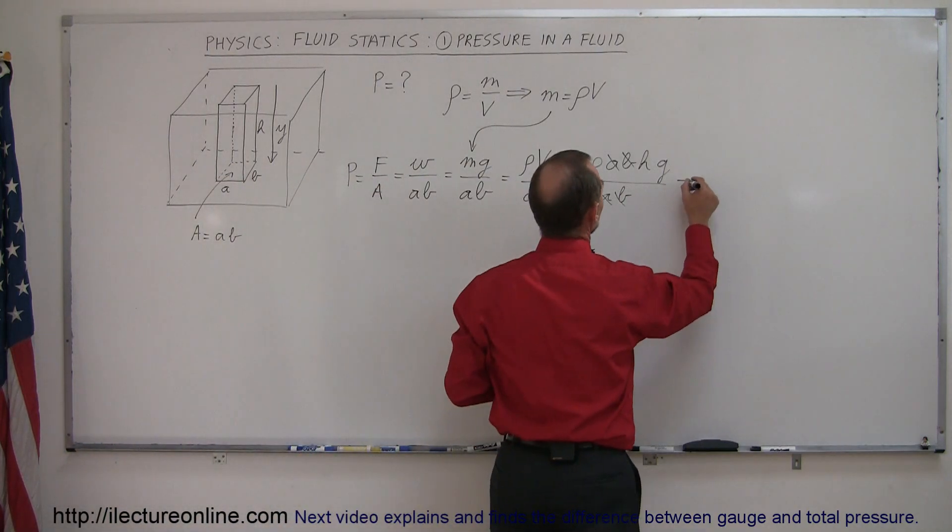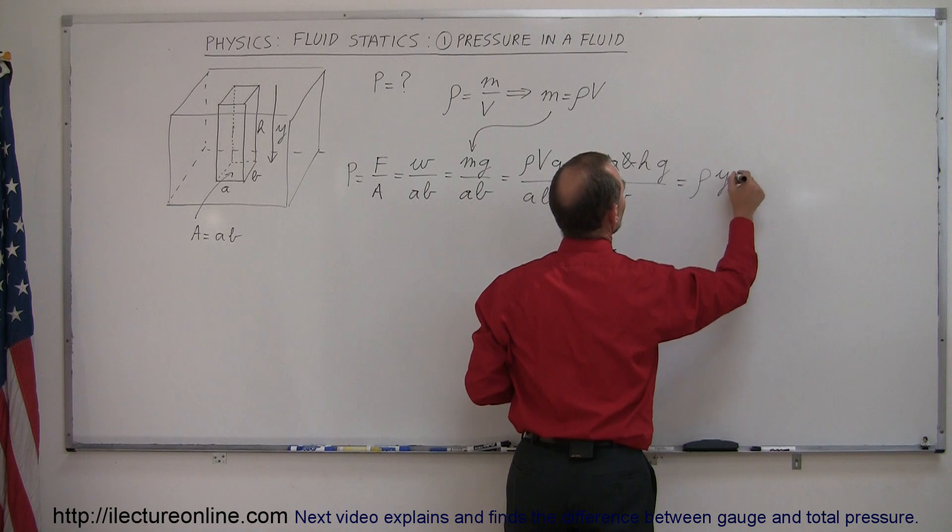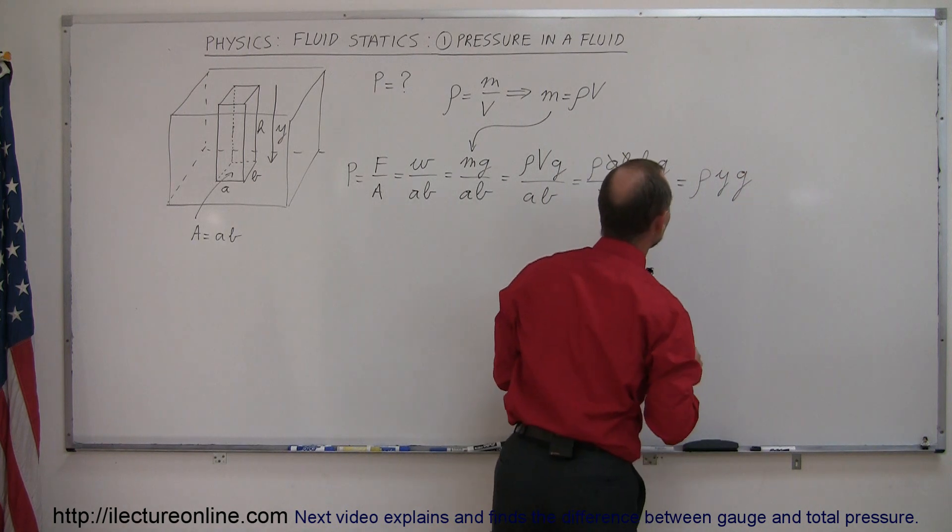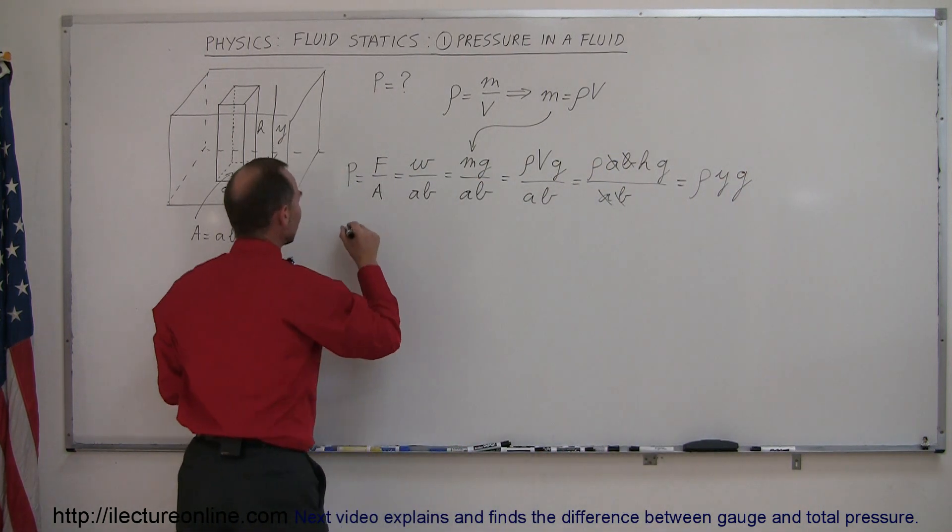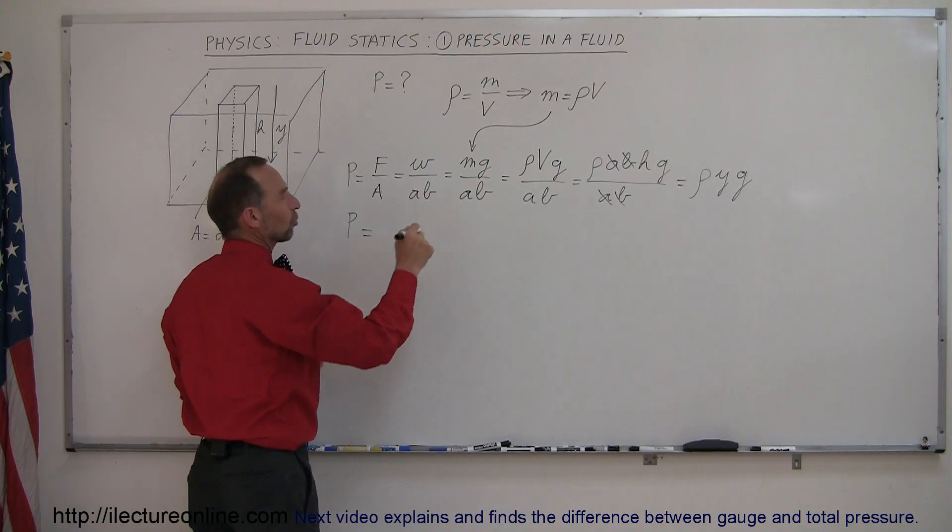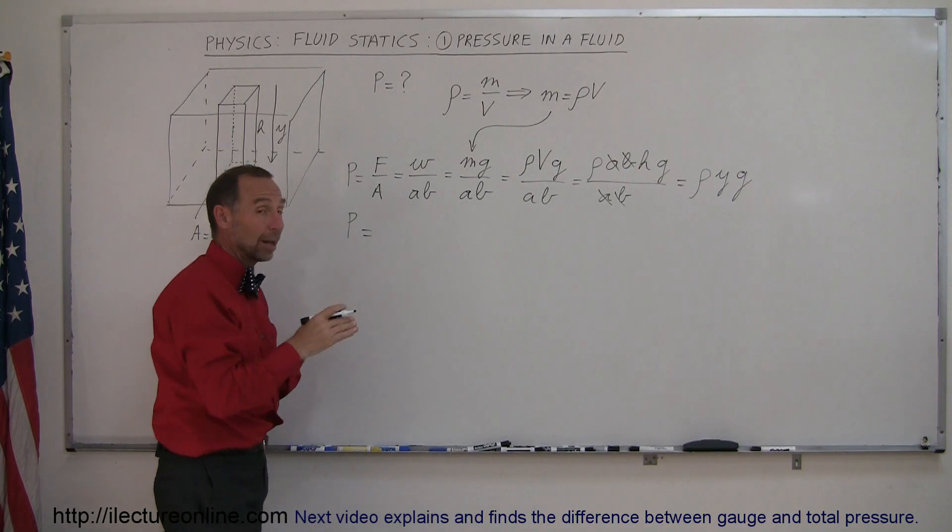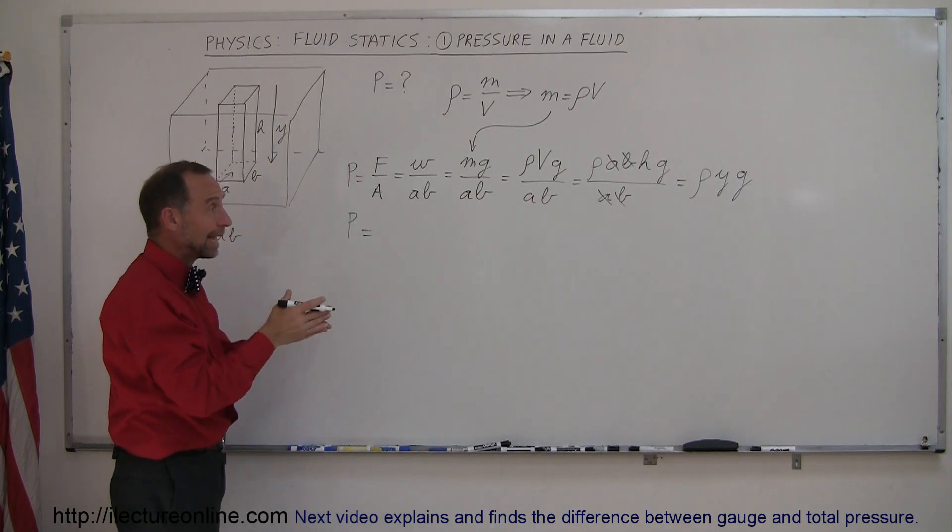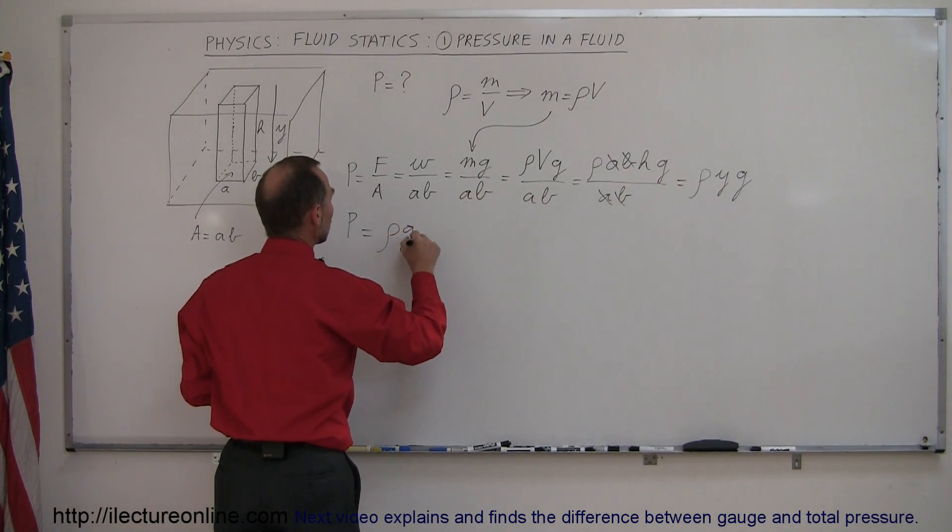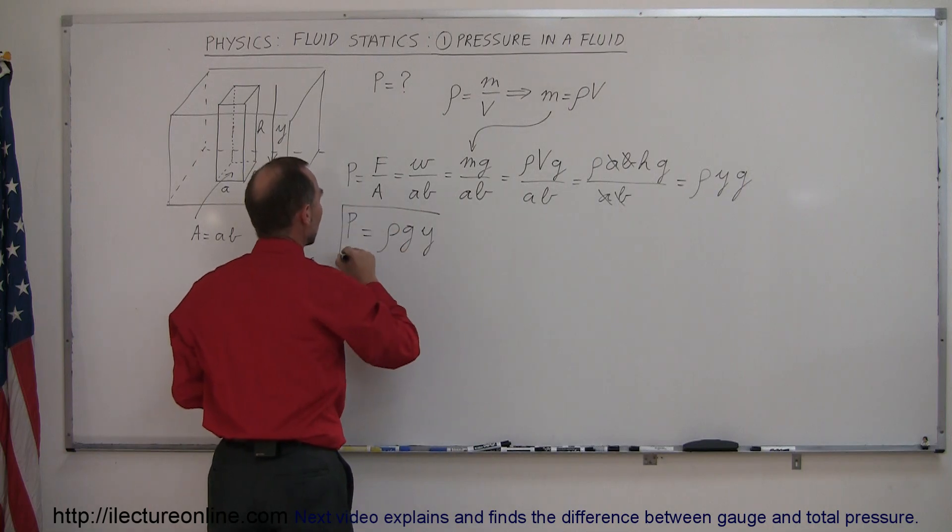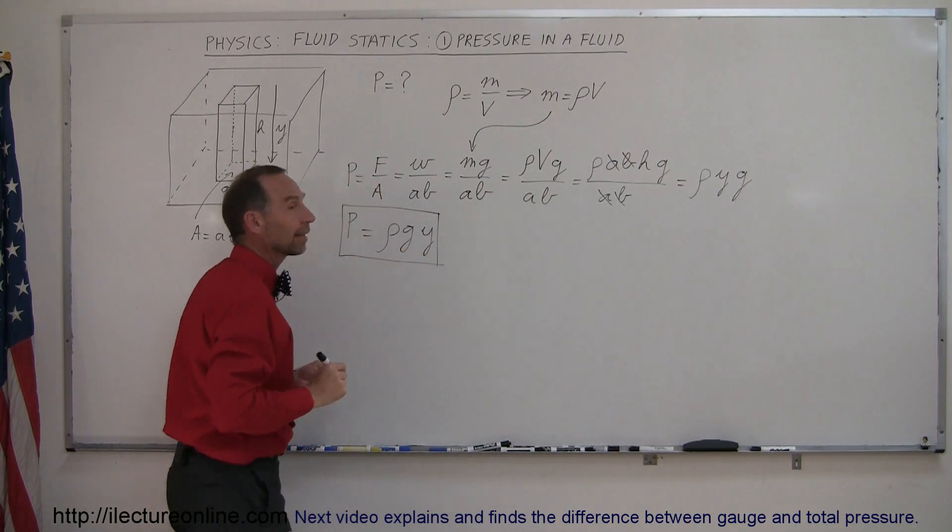And so this can be written as the density times Y times G. And then finally, the equation we like to use, we like to rearrange those terms and write it as the pressure at the bottom of the pool, which is really the pressure at any depth Y, can be written as ρGY. And that's the equation we use to find the pressure inside the liquid.